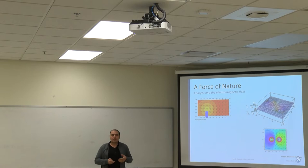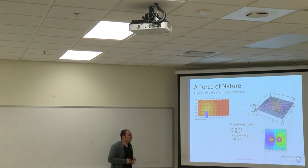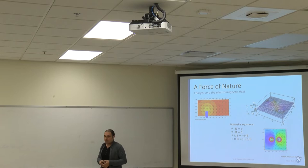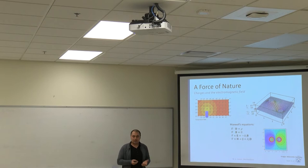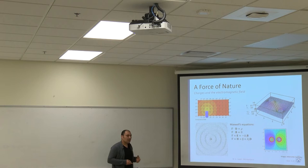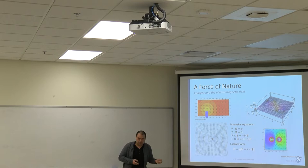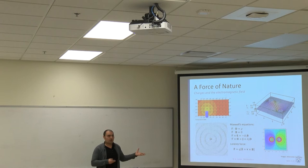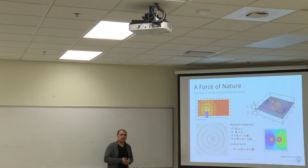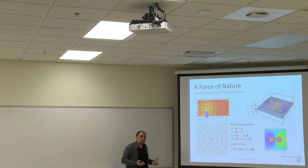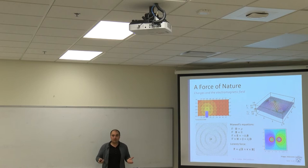The way charges and currents interact with the electric and magnetic field are described through Maxwell's equations. In Maxwell's equations, D, B, E, and H are names for the electric and magnetic fields, while rho and J are the charges and the currents. The presence of charges and currents give rise to changes in the electric and magnetic field. This relationship goes both ways: if there's a change in the electric and magnetic field and there's a charge present, that charge will experience a force. So charges create electric and magnetic fields, and electric and magnetic fields act on the charge — that's the basic dynamics between matter and the electromagnetic field.